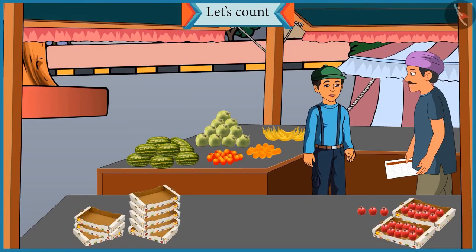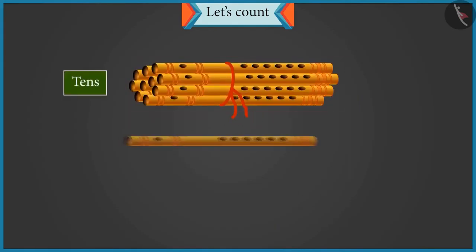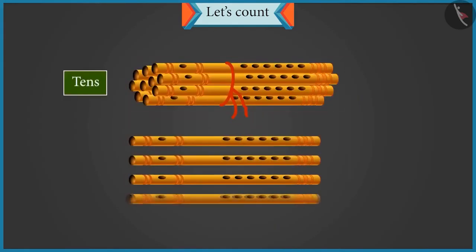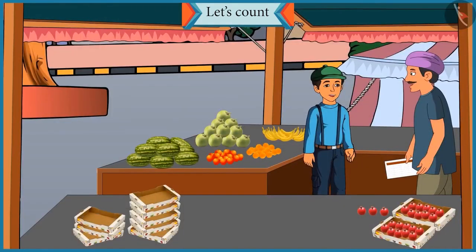Uncle, a group of ten means tens. In school our teacher taught us that a group of ten is called tens and less than ten are called ones. Okay Chotu, so you count the fruits and tell me how we can show them in tens and ones. Okay, uncle.